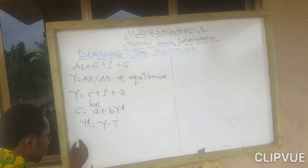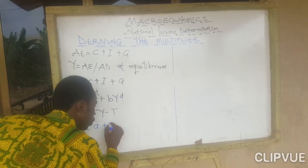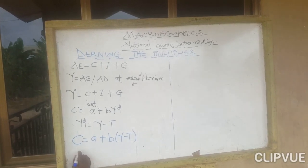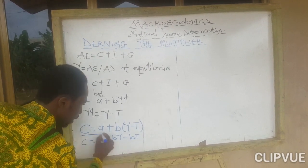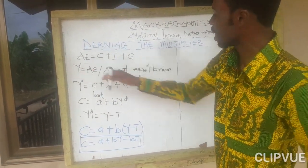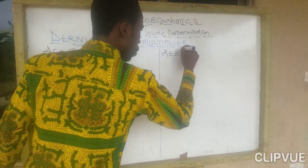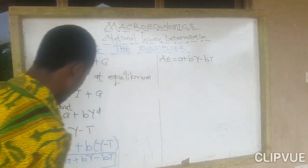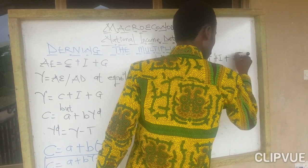So if we are using lump sum tax, the new consumption function is going to be a plus b times (Y minus T), which gives us C = a plus bY minus bT. That is the consumption function. Now substituting, aggregate expenditure equals a plus bY minus bT, and it is left with plus investment plus government spending.